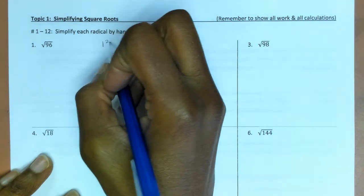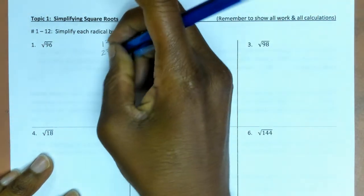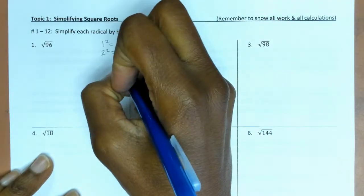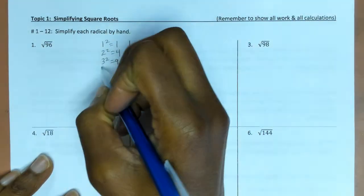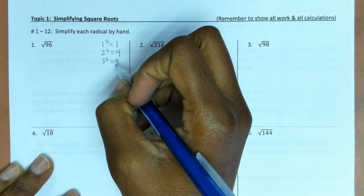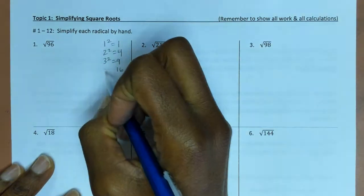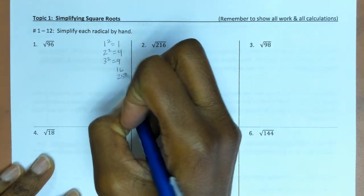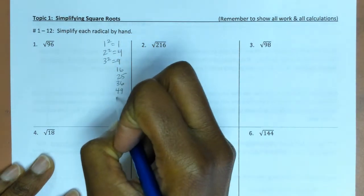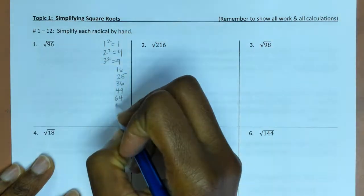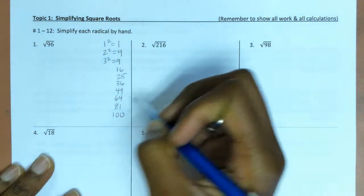1 squared is 1, 2 squared is 4, 3 squared is 9, and so on. I'm going to list our perfect squares up to 100: 4 squared, 5 squared, 6 squared, 7 squared, 8 squared, 9 squared, and 10 squared.